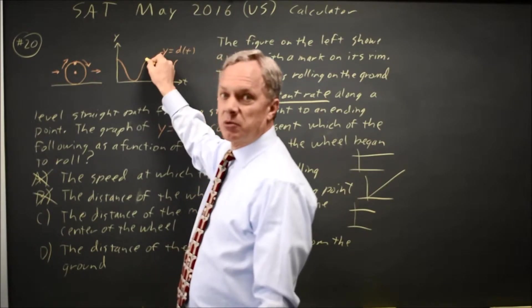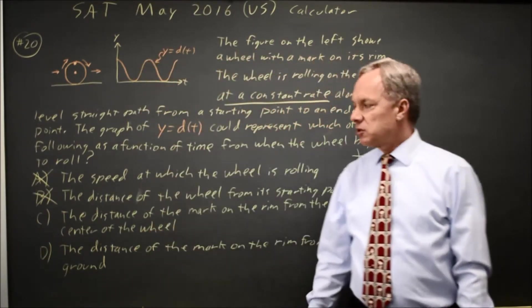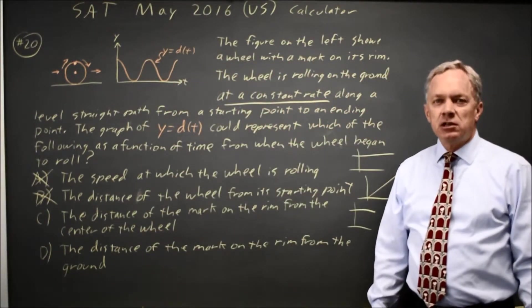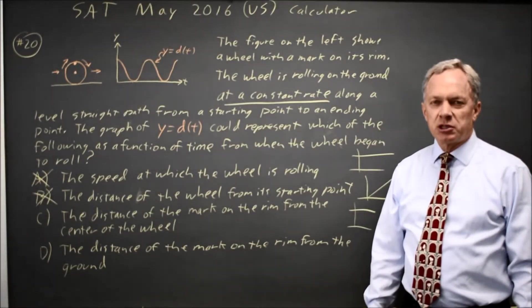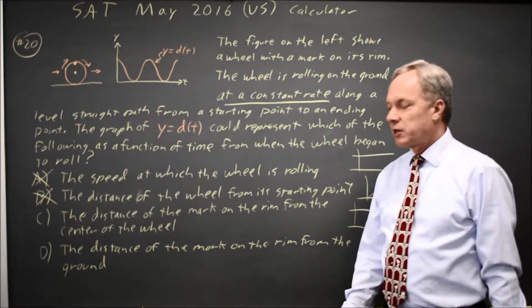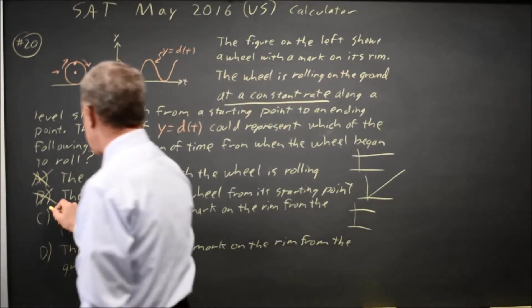And a full circumference, the mark will be back at the top. So, choice D is an appropriate description for what d of t might represent. D would be the correct answer.